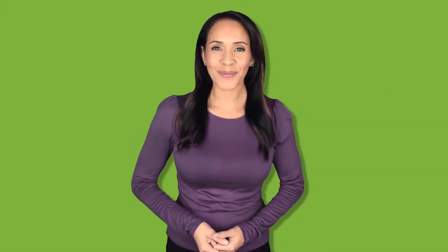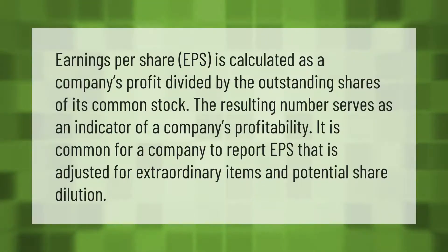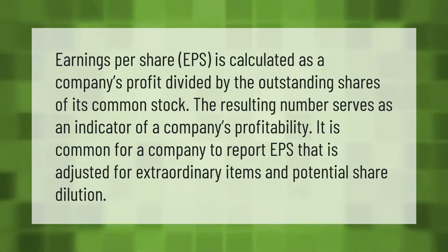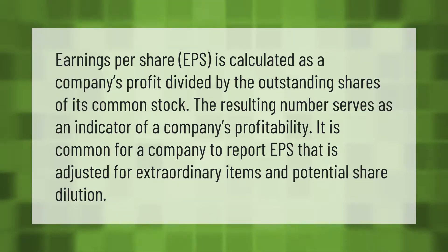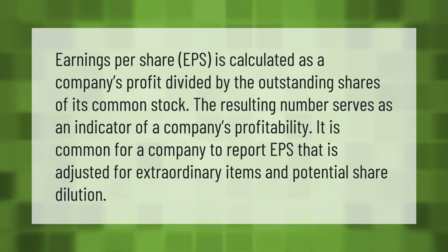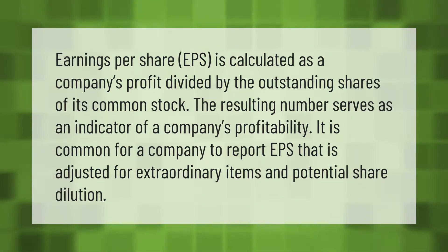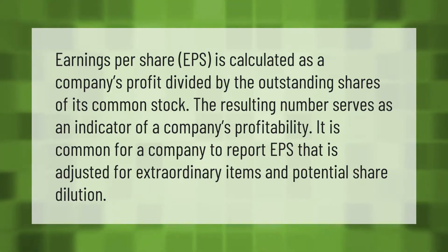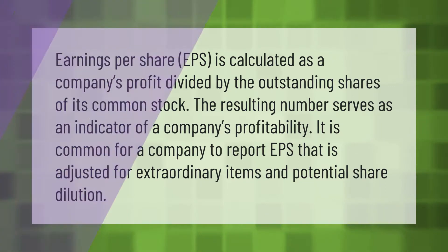Earnings per share, or EPS, is calculated as a company's profit divided by the outstanding shares of its common stock. The resulting number serves as an indicator of a company's profitability. It is common for a company to report EPS that is adjusted for extraordinary items and potential share dilution.